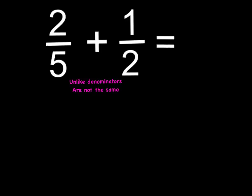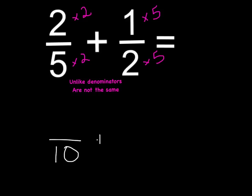If you don't know, the easiest way to find a common denominator is to multiply the two numbers together. So in this case, we will multiply 5 times 2 and 2 times 5. Now since we multiplied the denominator by 2, we must also multiply the numerator by 2. On the right side, because we multiplied the denominator by 5, we must multiply the numerator by 5. Once we multiply 5 times 2, we find that the common denominator is 10.